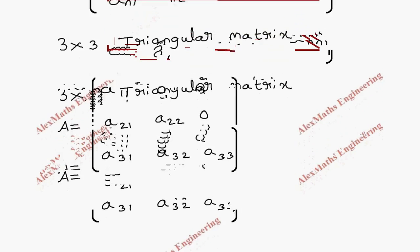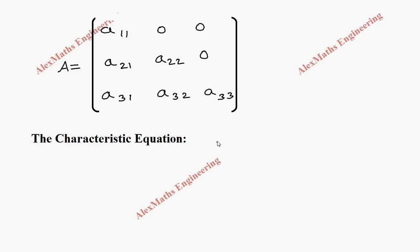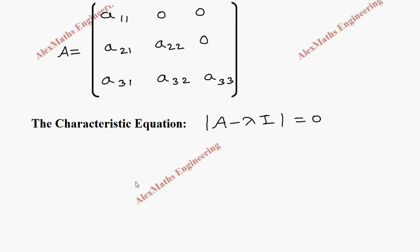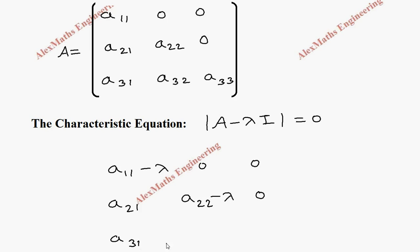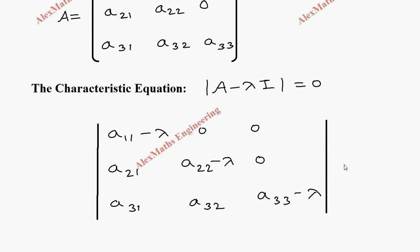Now we are going to write the characteristic equation for this matrix A. This will be det(A − λI) = 0. So we get the determinant: first row is (a11 − λ), 0, 0; second row is a21, (a22 − λ), 0; third row is a31, a32, (a33 − λ); and this determinant value equals 0.